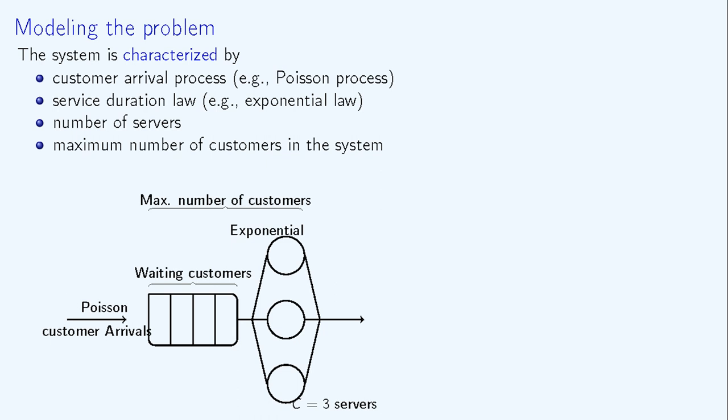So, we have to define the total maximum number of clients in the system, including the clients that are being served and the waiting clients. And finally, we have to clarify the scheduling policy, or the order in which customers access servers.